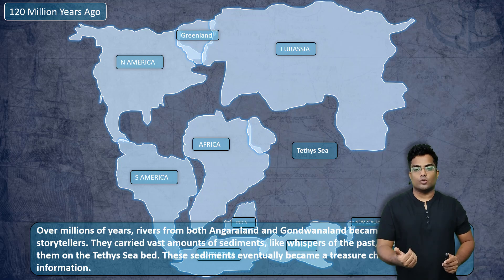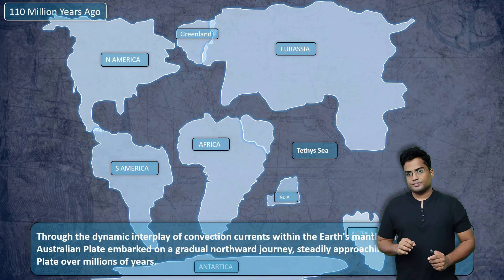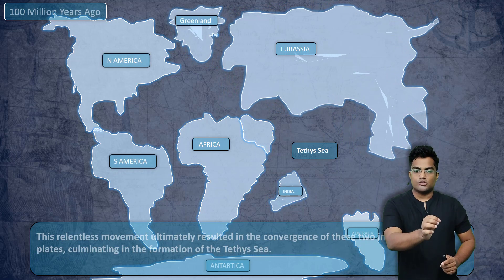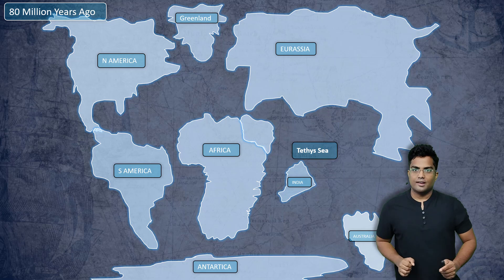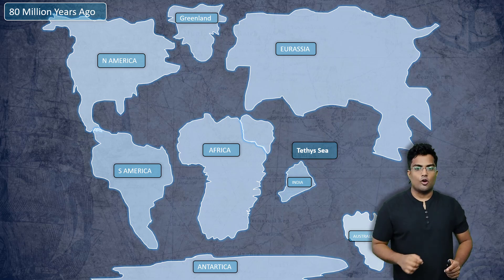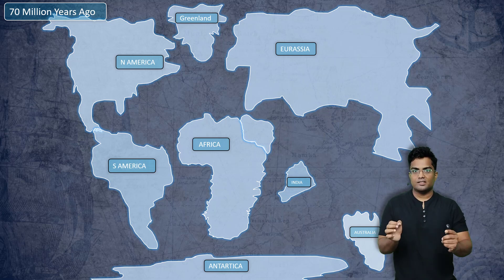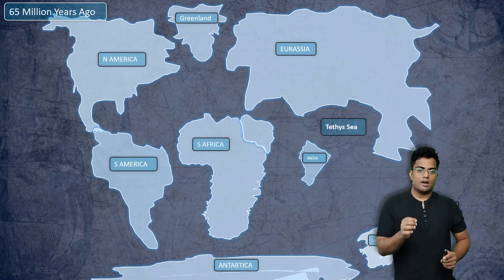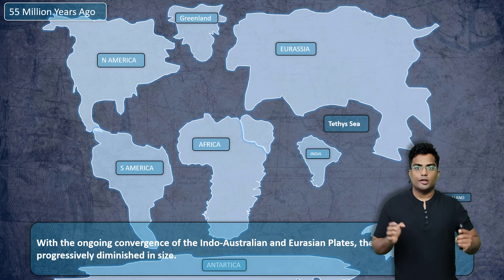Around 120 million years ago, India completely dissects itself from Africa. There is a split and India pushes away from Africa. You can also see Australia, New Zealand, and Antarctica forming. India is now moving towards the North. Earlier, India was located in the Southern Hemisphere, but now it has moved northward into the Tethys Sea. Africa is developing into its current structure.